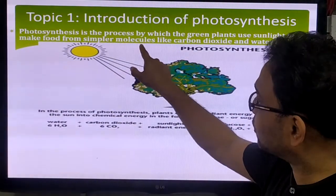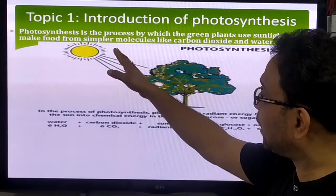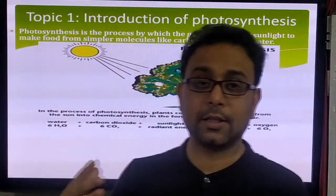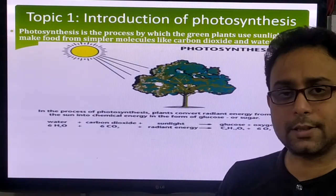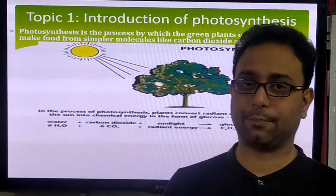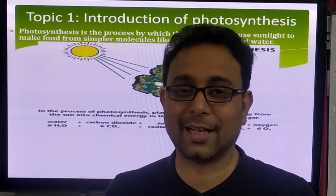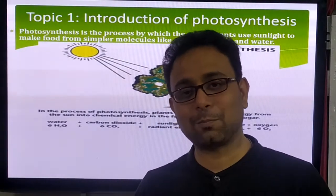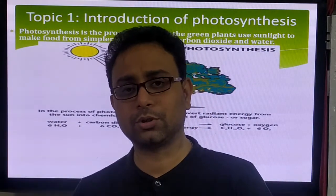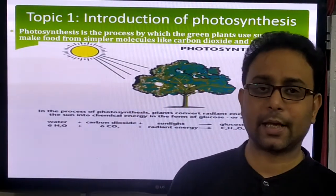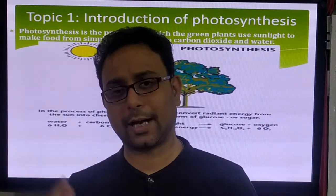Photosynthesis is the process by which green plants use sunlight to make food from simpler molecules. The simpler molecules in that process are carbon dioxide and water. These react together in the presence of sunlight and produce a complex food material — that is glucose. This process is called photosynthesis. The photosynthesis process is most important for all living things, because no living organism can survive without photosynthesis, directly or indirectly.